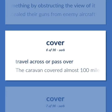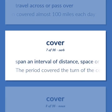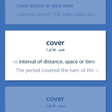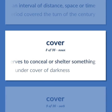Travel across or pass over — the caravan covered almost 100 miles each day. Span an interval of distance, space, or time — the period covered the turn of the century. A covering that serves to conceal or shelter something — under cover of darkness.